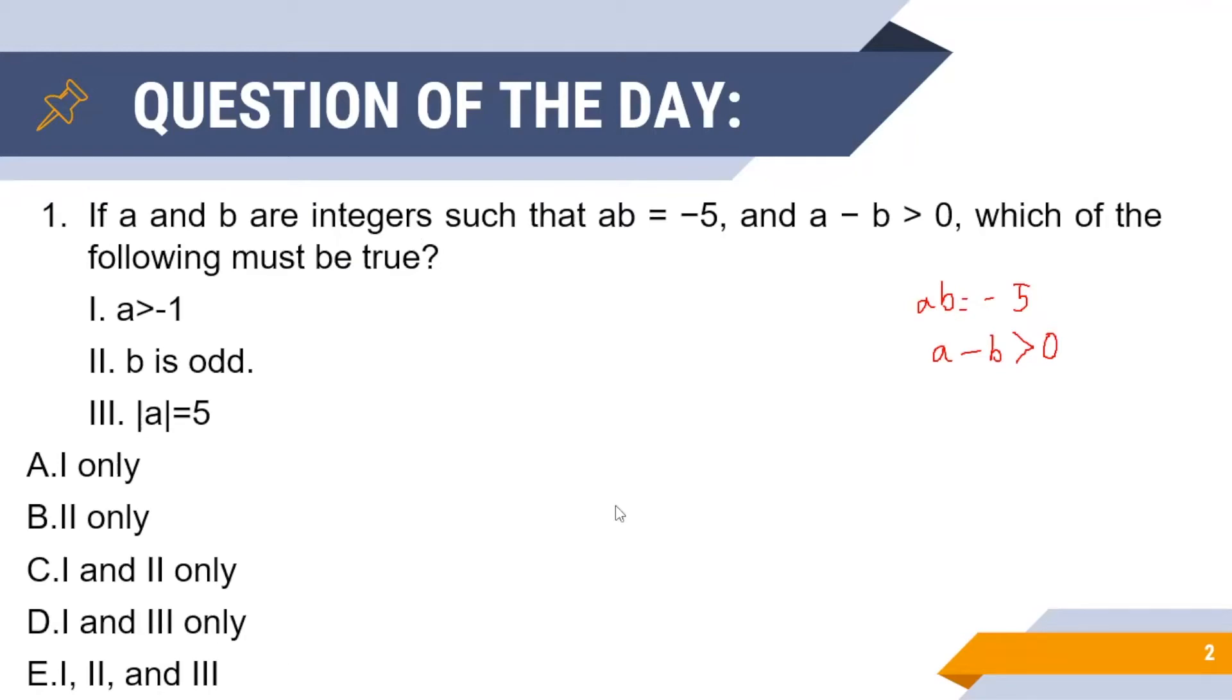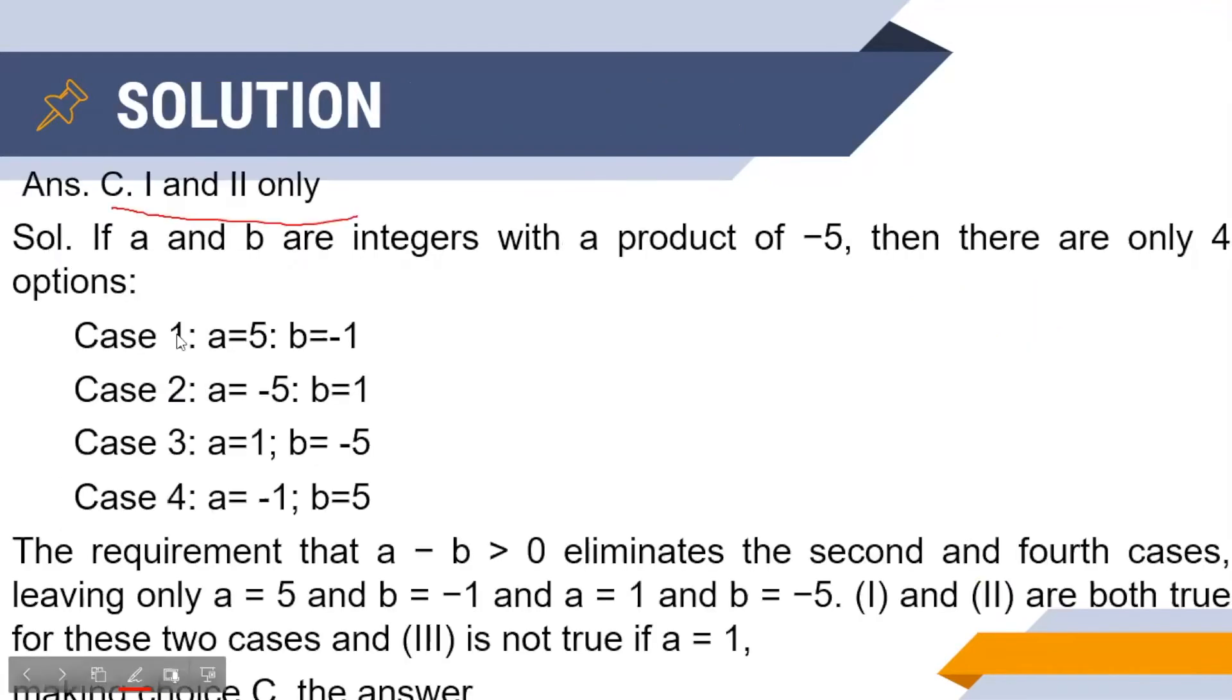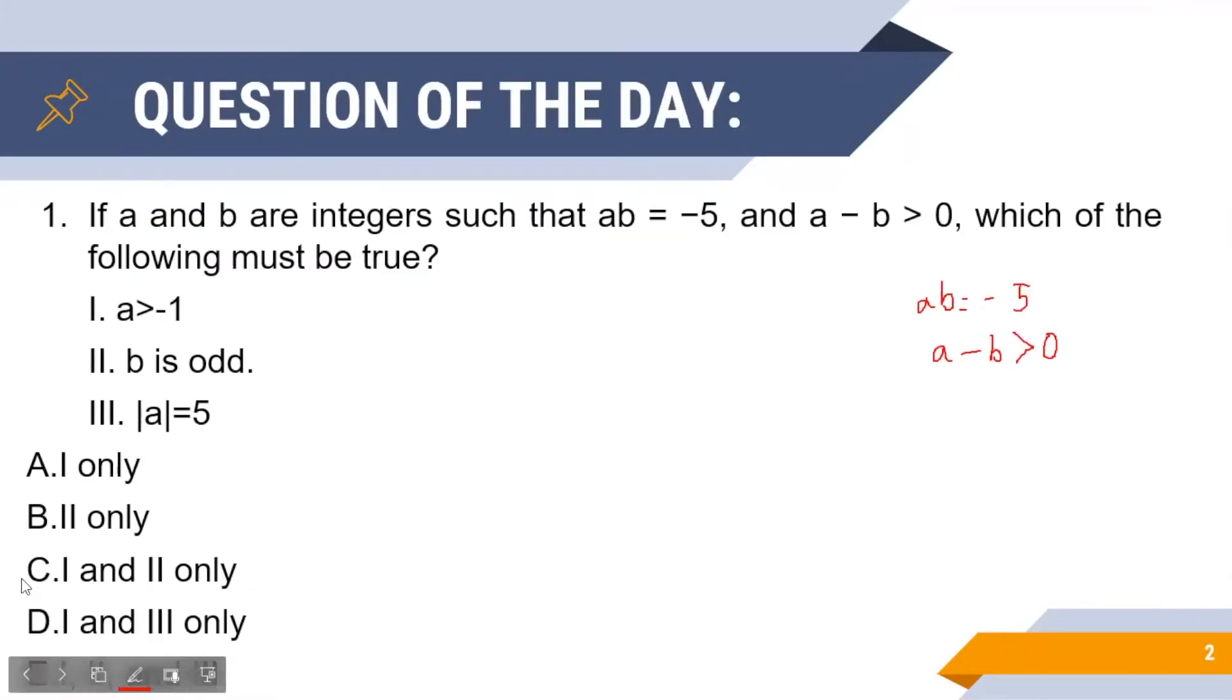Before proceeding with the detailed solution, let us take a quick glance at the correct answer. As you can see, the correct option is option C, that is one and two only—that is, a greater than minus one and b is odd hold true for all values of a and b. So how did we arrive at this particular conclusion?